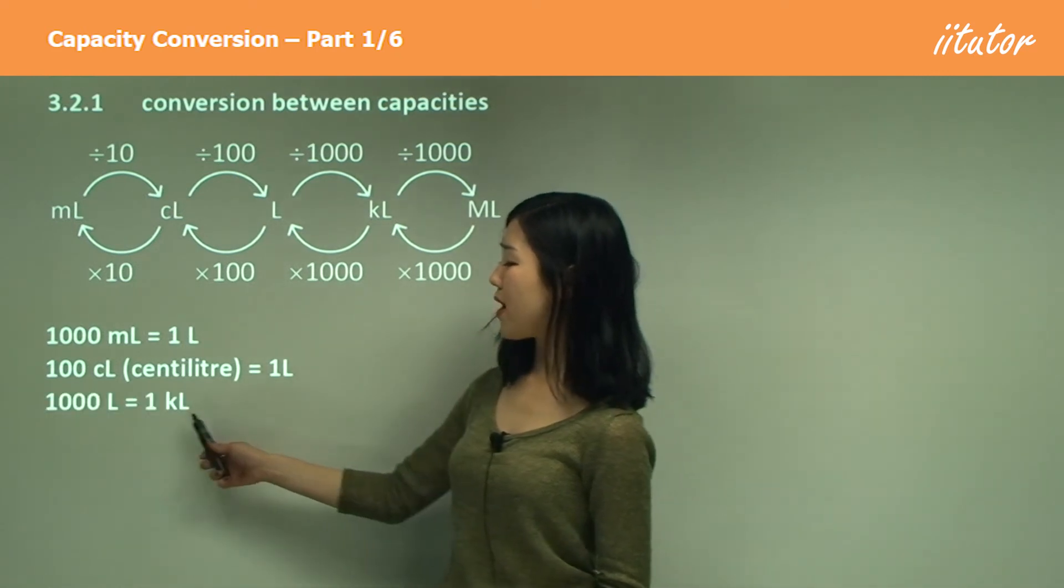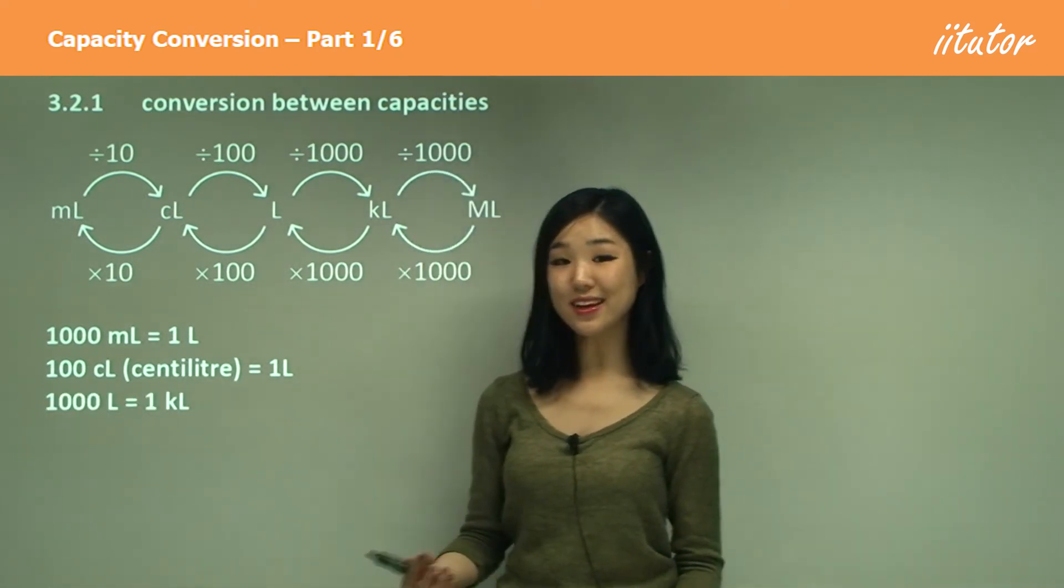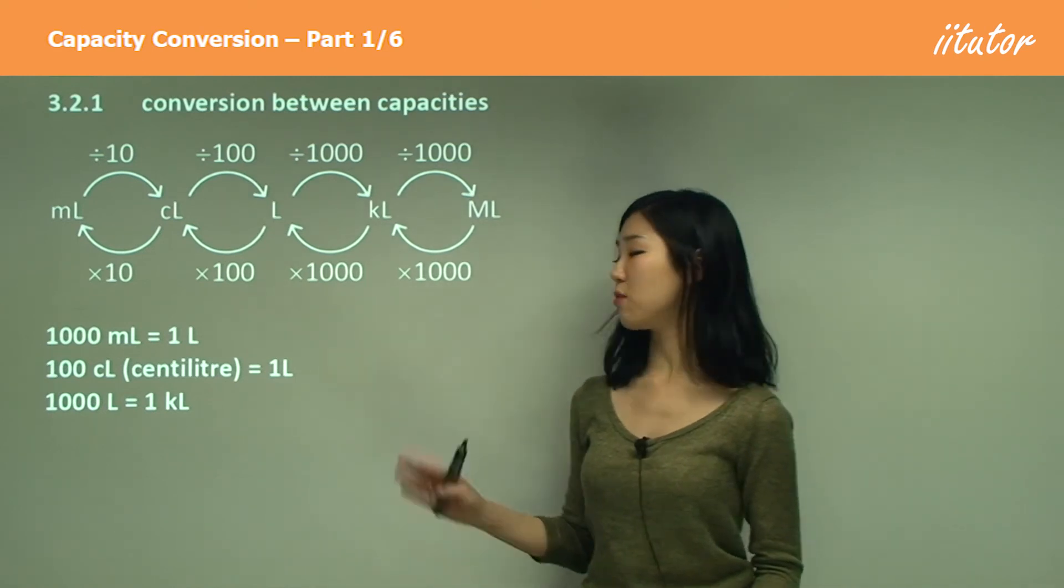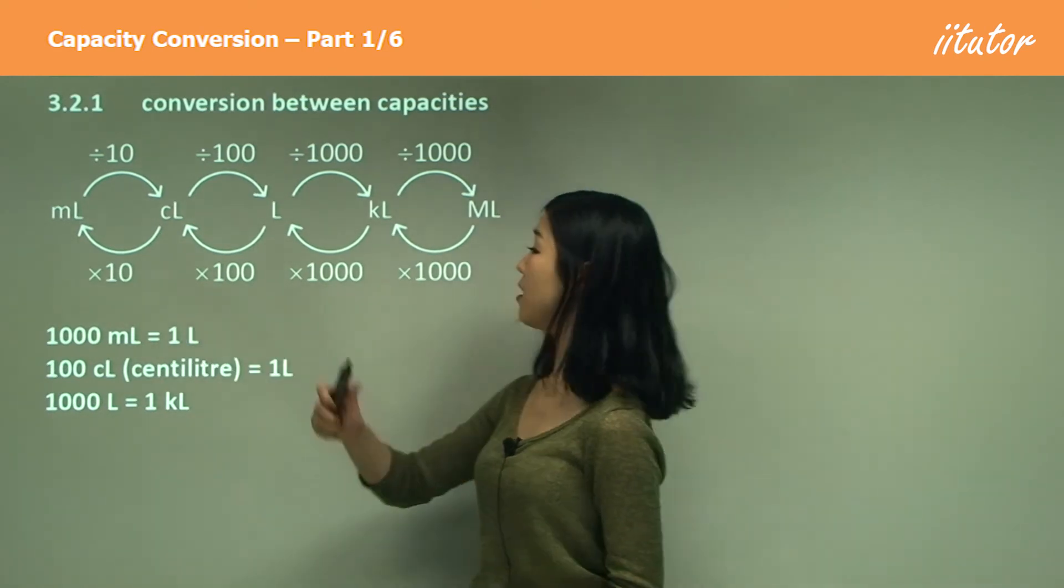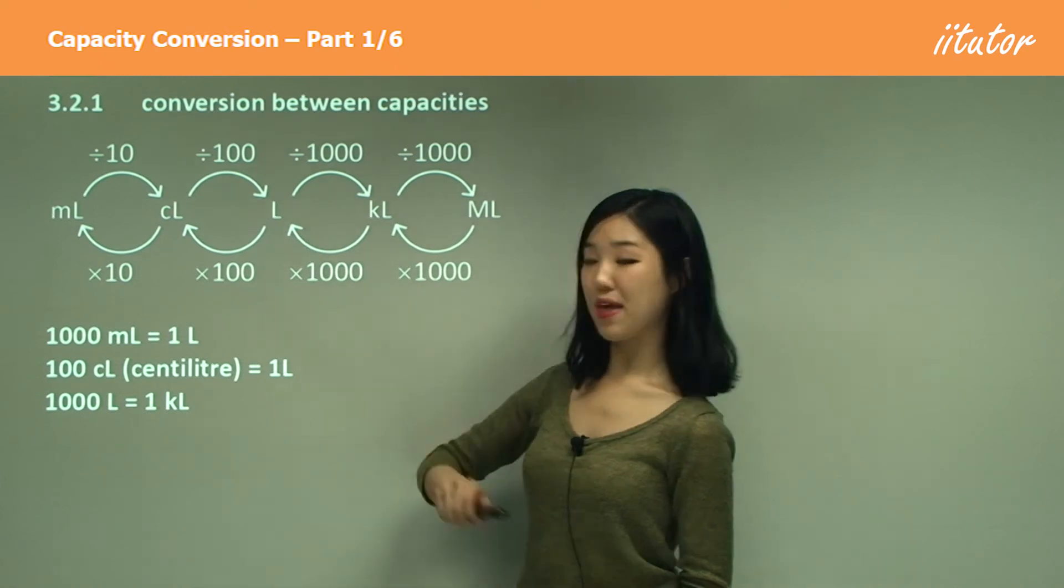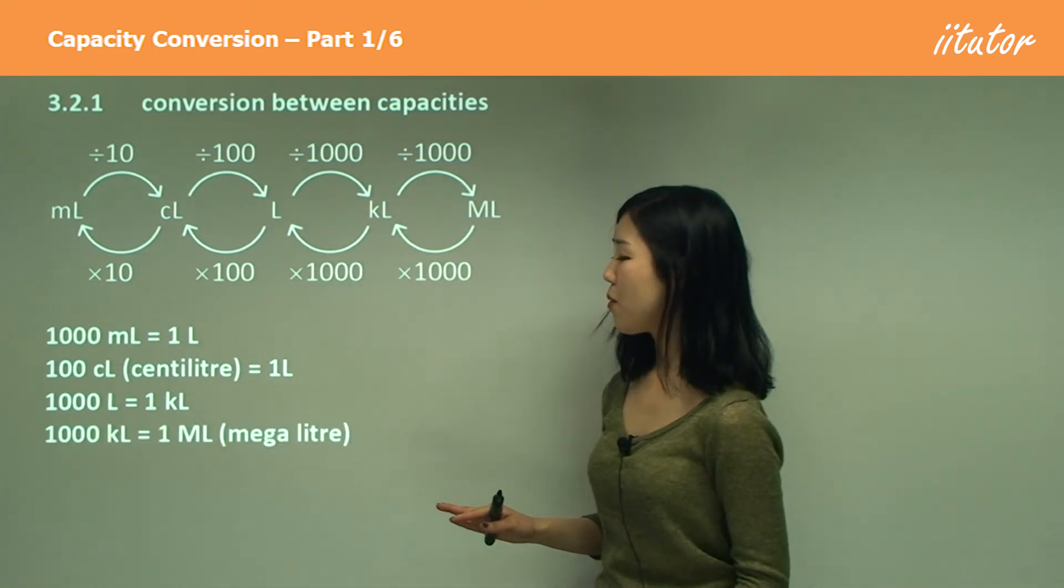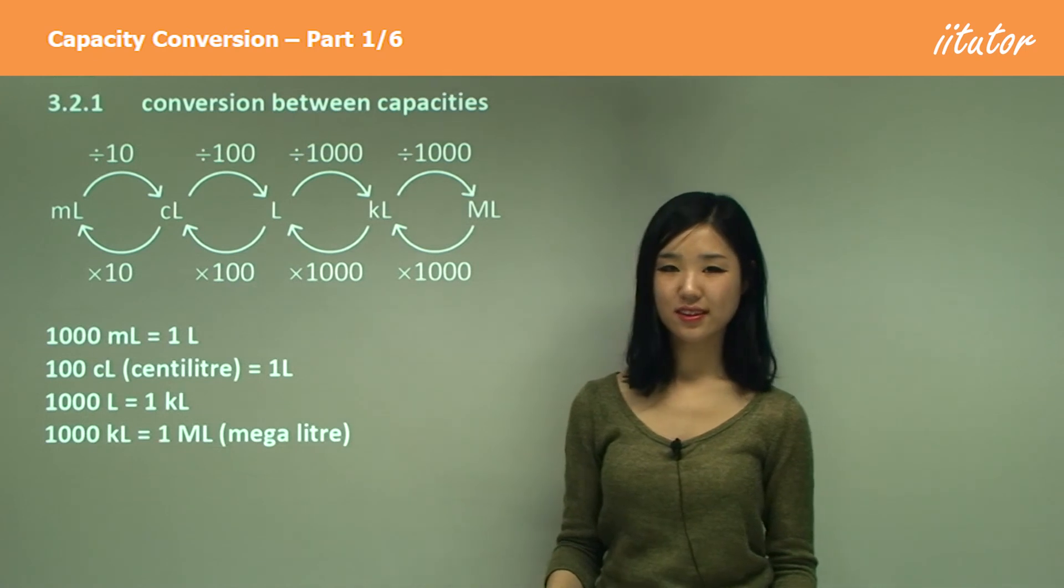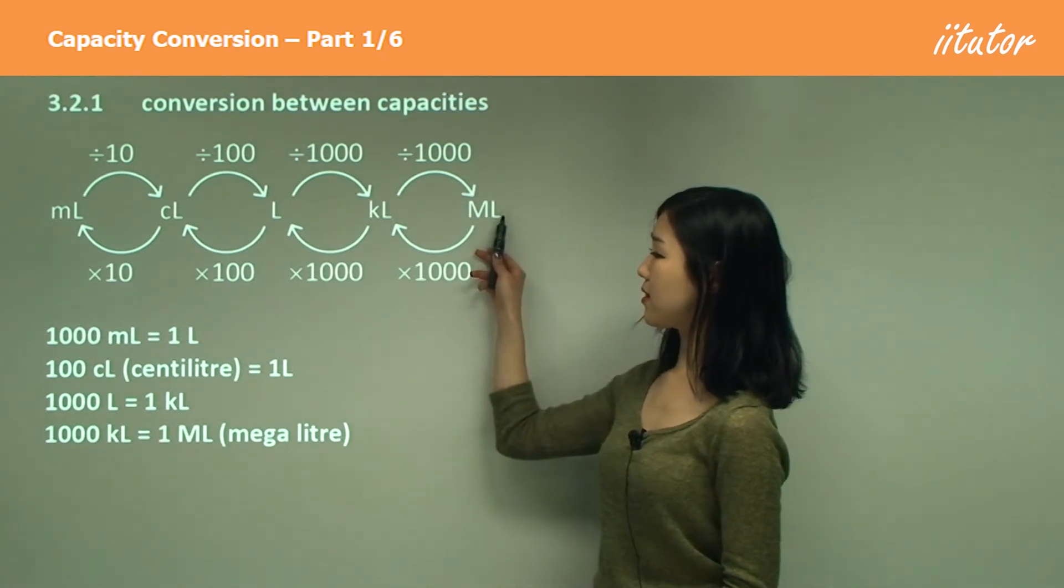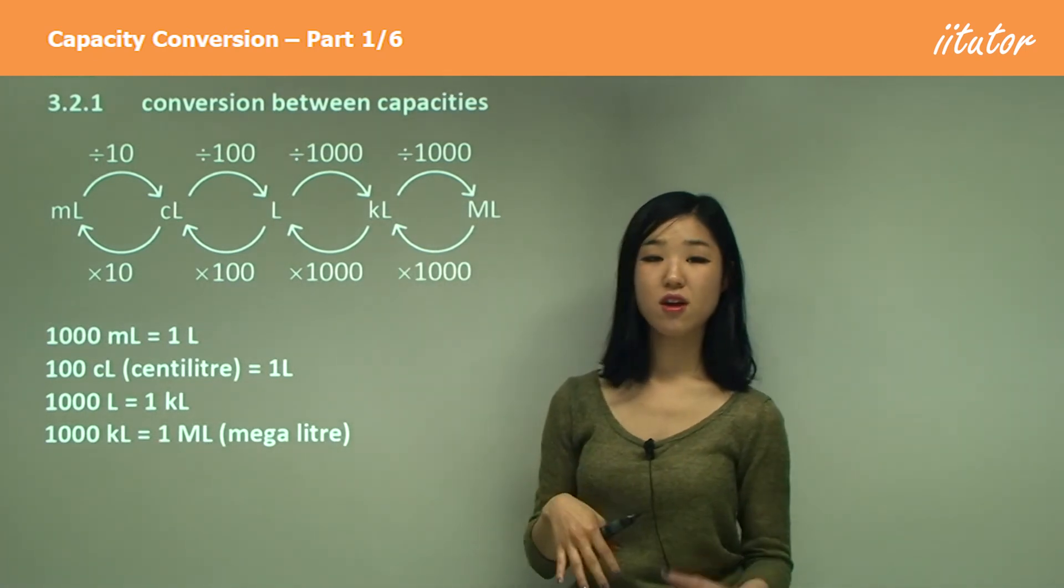The next one: one kiloliter is 1000 liters. As I said, kilo means 1000, so we simply multiply by 1000. And another one: one megaliter is 1000 kiloliters. Megaliter to kiloliter, 1000.